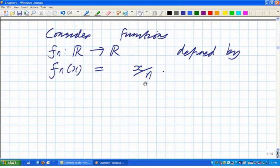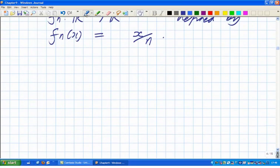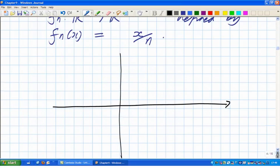So, fn of x is going to be x over n. And we're going to have a look and see what these functions look like and what they do. I'll leave it to you to check some of the details of this in full. But let's at least have a sketch and see what these functions are doing. Here we are. Let's have some axes.